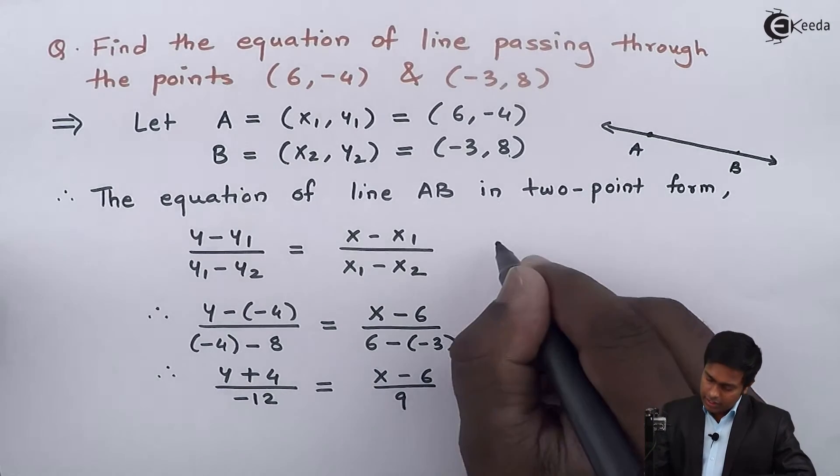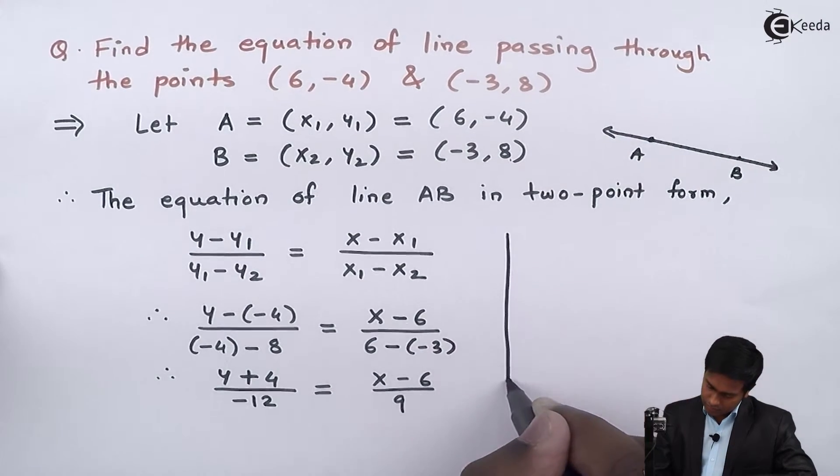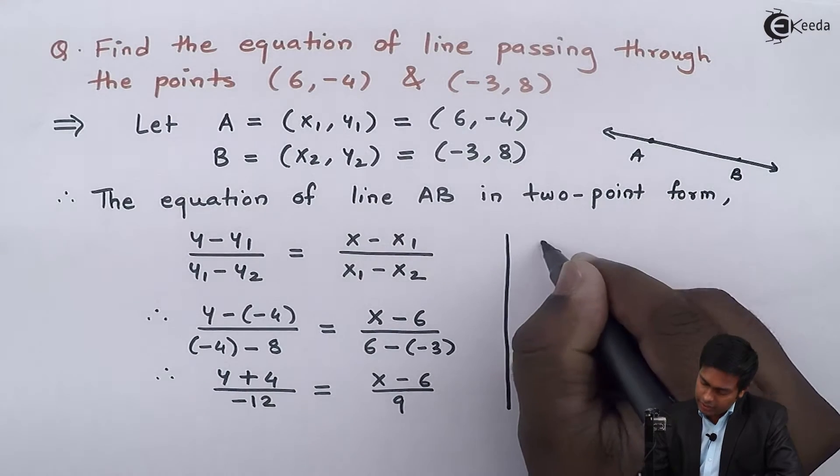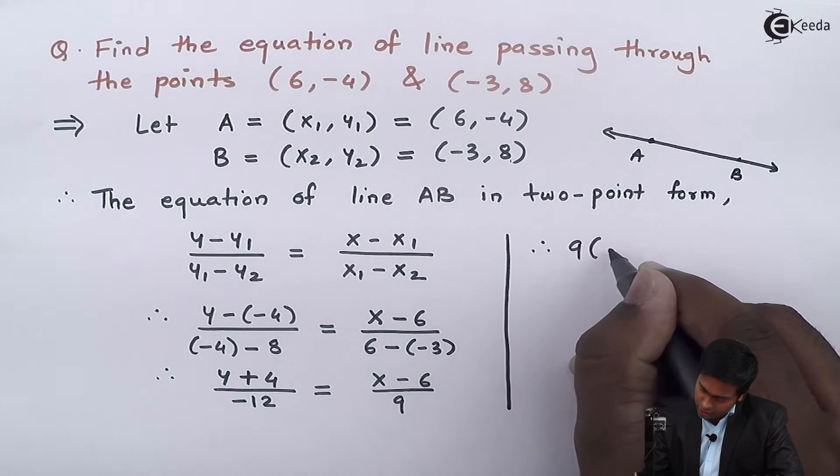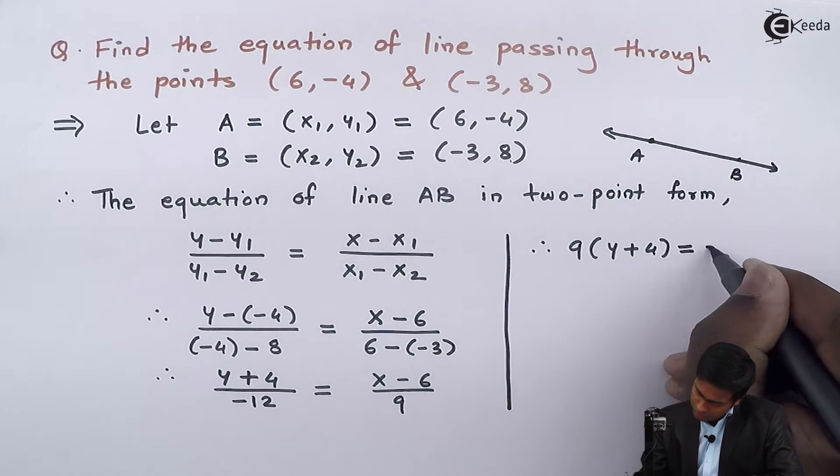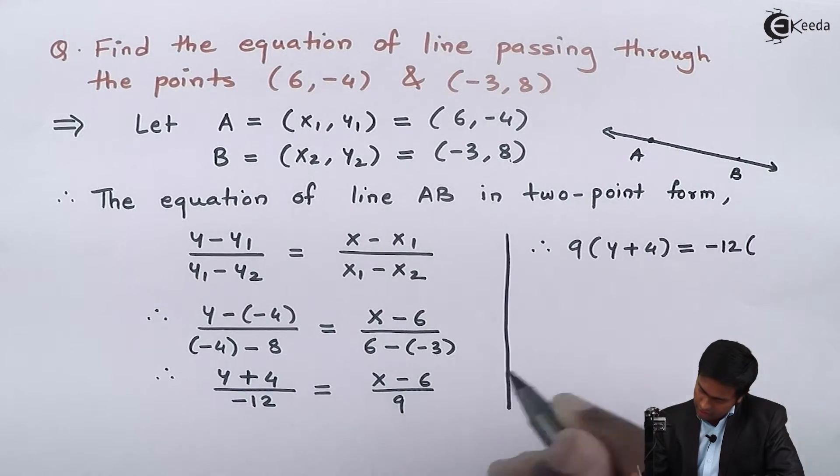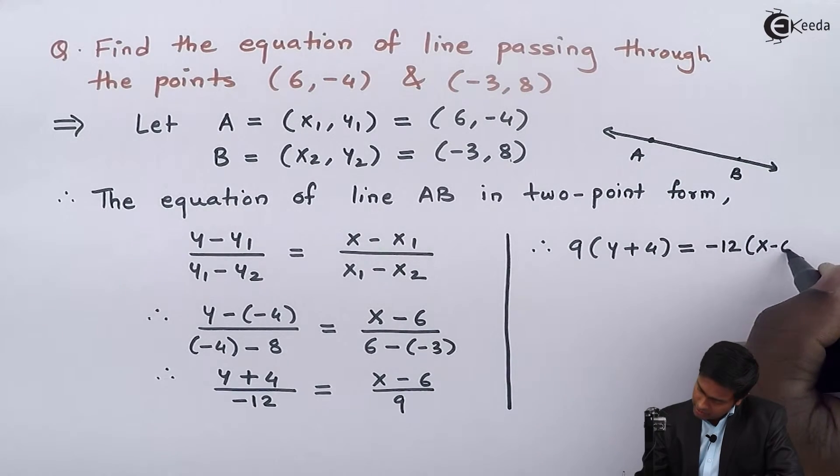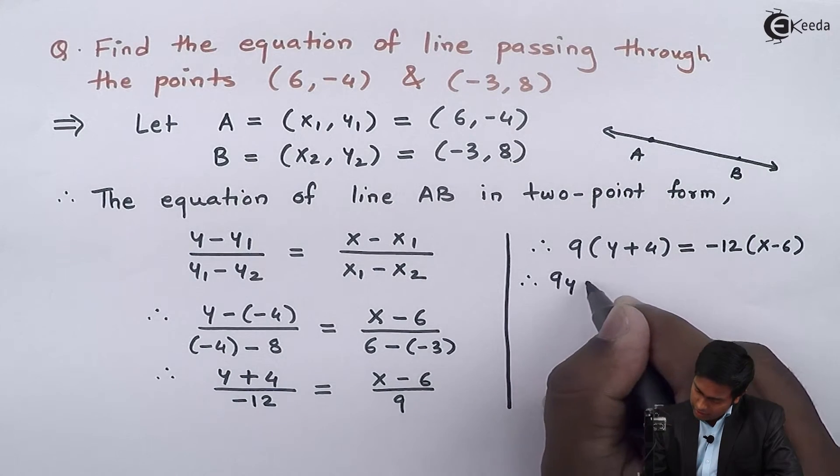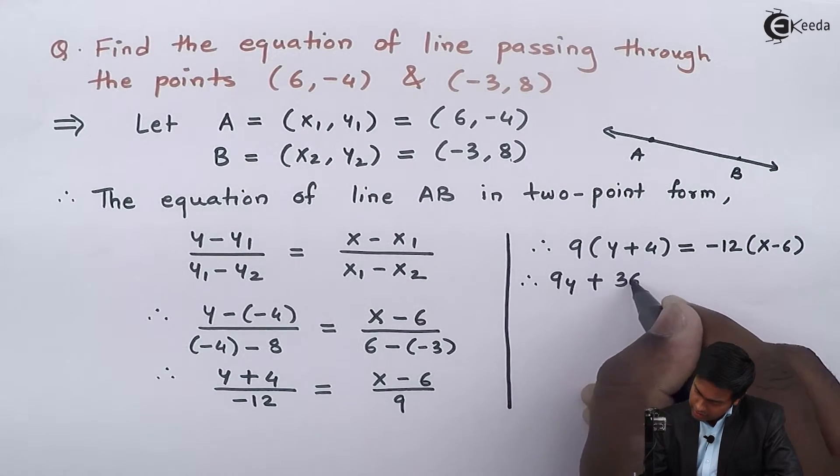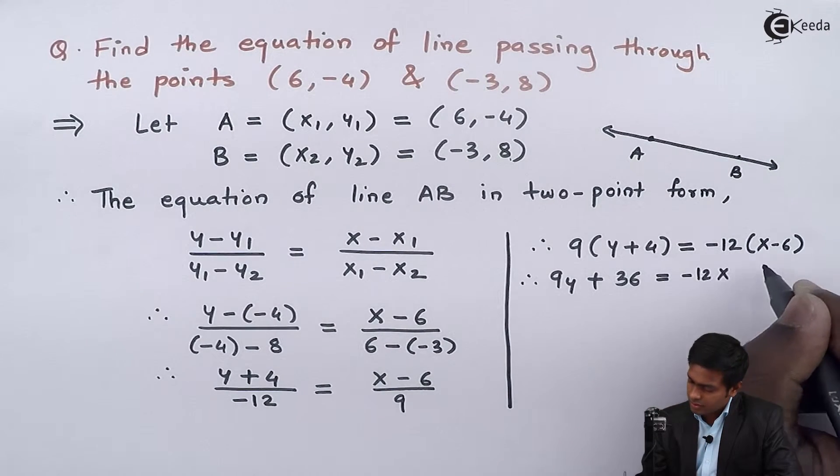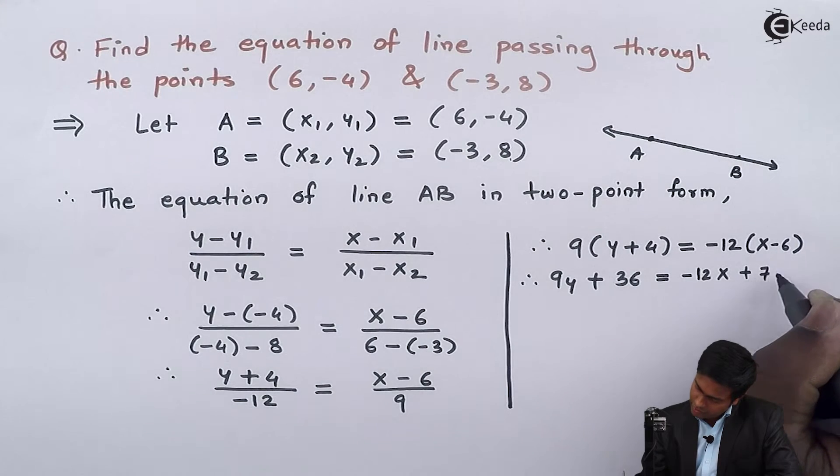By performing cross multiplication, we get 9(y + 4) = -12(x - 6). Therefore, 9y + 36 = -12x + 72.